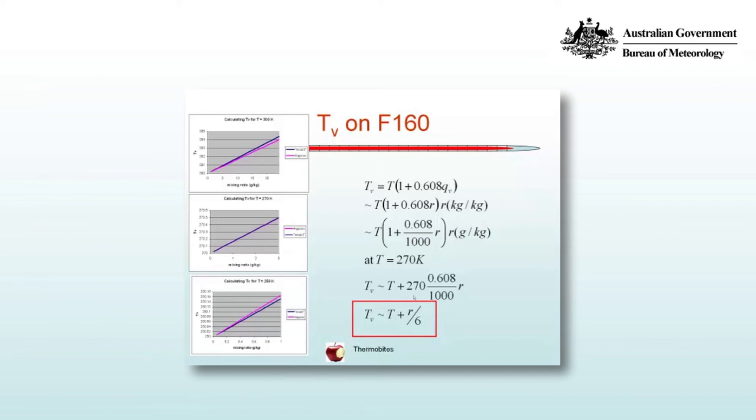There's three plots on the left hand side, and there's the exact solution, or the exact approximation we have at the top in blue, and the approximation Tv is approximately T plus R on 6, which is the magenta line. And you can see when the temperature is 270 degrees, our two equations for virtual temperature are exactly the same.